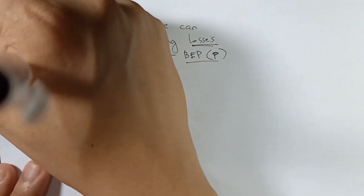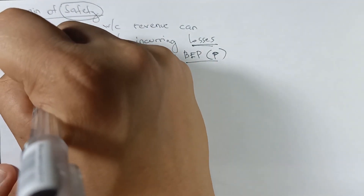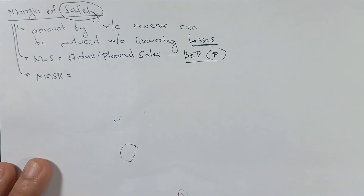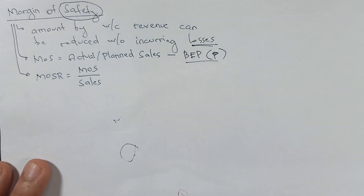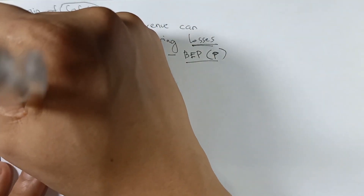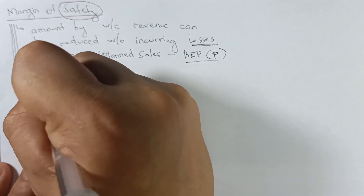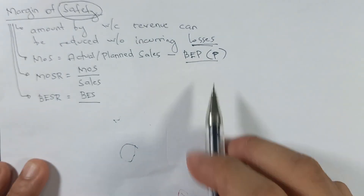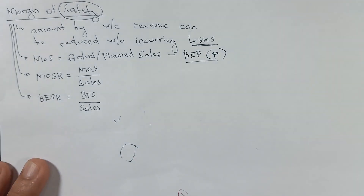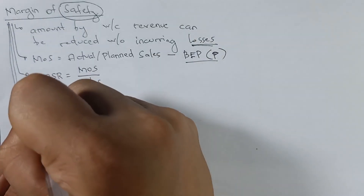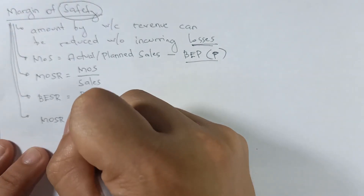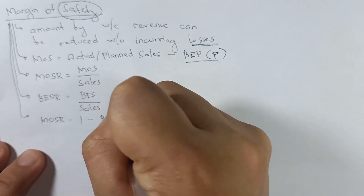Aside from margin of safety in pesos, problems also ask for the margin of safety ratio, which is equal to the margin of safety divided by sales. There is also the break-even sales ratio, equal to break-even sales divided by sales. Since margin of safety equals sales minus break-even sales, the margin of safety ratio equals one minus the break-even sales ratio.